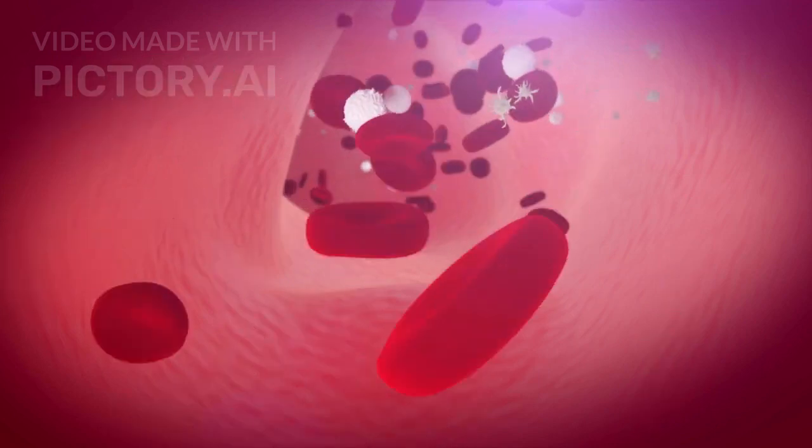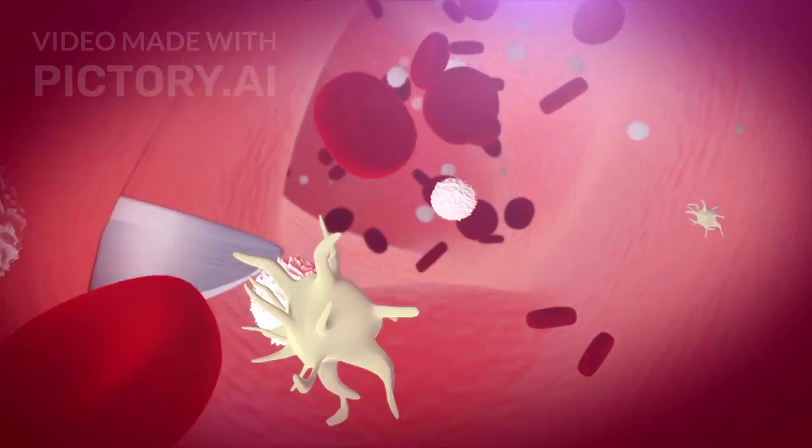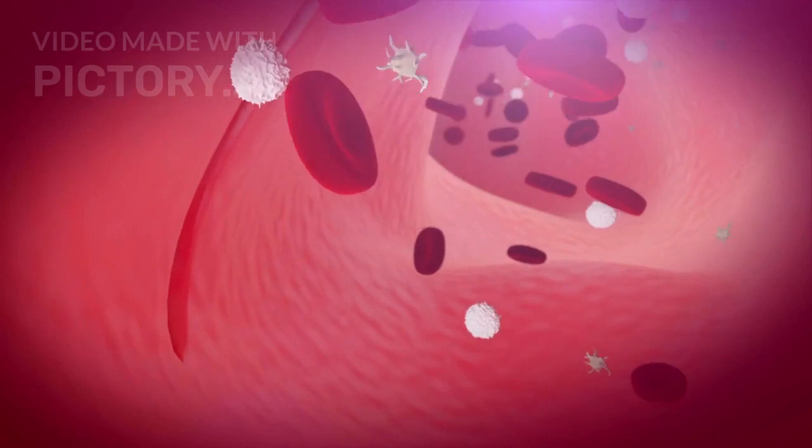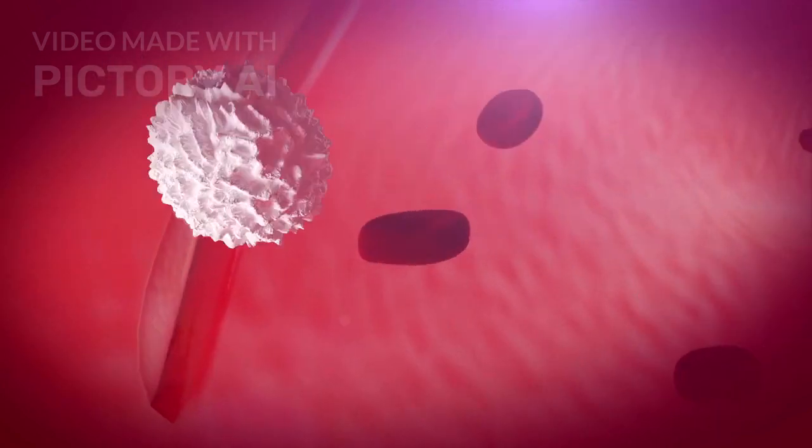To summarize, RBCs transport oxygen, WBCs defend against infections, and platelets help in blood clotting.